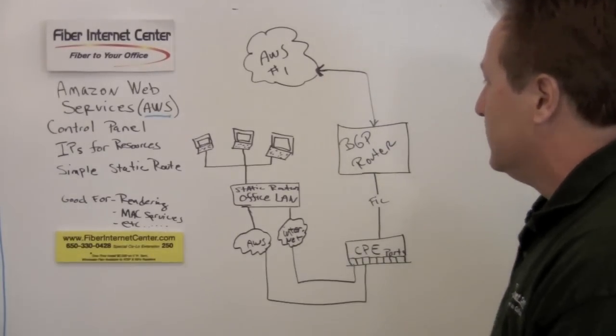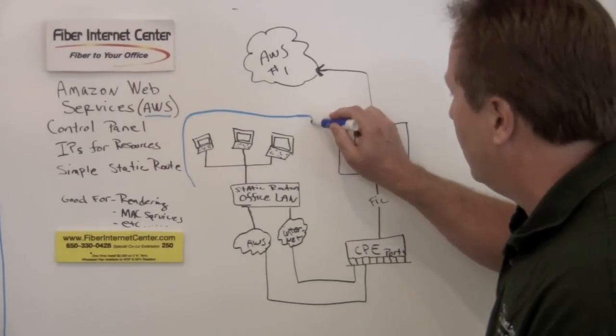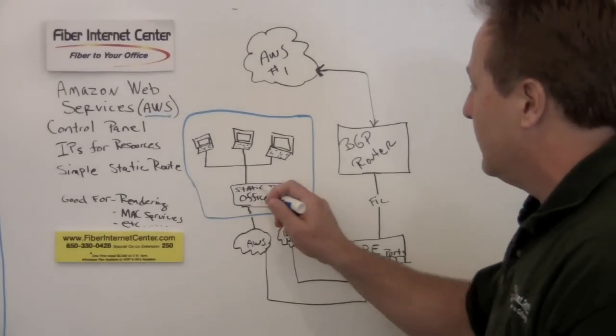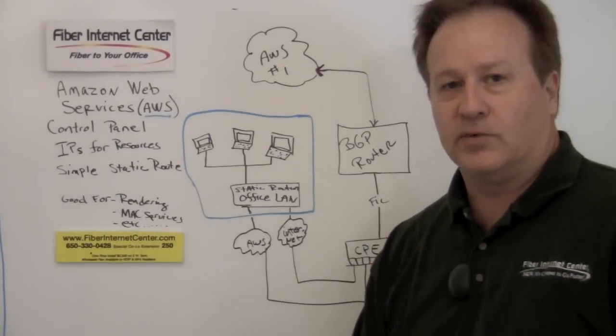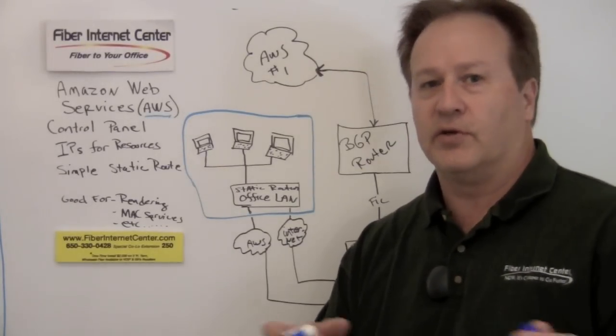The way this works is, let's say these are in your office. So this is your office right here. And what Fiber Internet Center does is on the router that we provide you transit with, you don't have to get our transit, as a lot of you know, you can buy transit from other companies too.